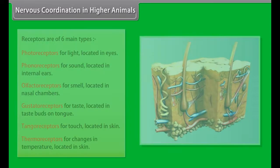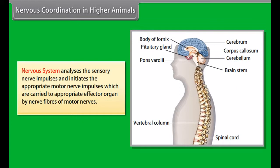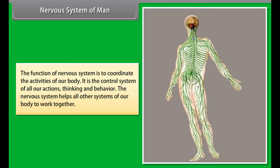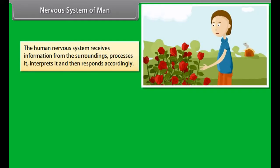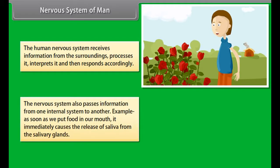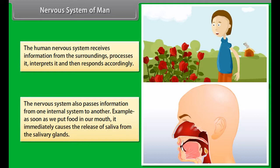Receptors are of six main types: photoreceptors for light located in eyes, phonoreceptors for sound in internal ears, olfactory receptors for smell in nasal chambers, gustatory receptors for taste in taste buds on the tongue, tangoreceptors for touch in the skin, and thermoreceptors for temperature changes in the skin. The effector system is formed of effector organs including muscles and glands, which give the response such as contraction or relaxation of muscles and switching glandular secretion on or off.